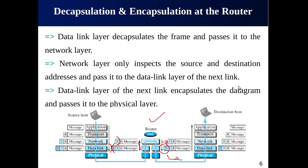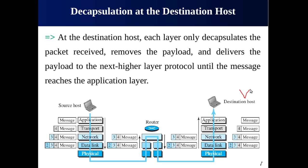Finally, at the destination host, decapsulation is a simple process. Each layer decapsulates the packet it receives, removing the headers from the payload and delivering the payload to the next higher layer protocol, until the message reaches the application layer. The bits arrive at the physical layer, are handed to the data link layer which removes its header, then the network layer removes its header, the transport layer removes its header, and the message is delivered to the appropriate process at the application layer.